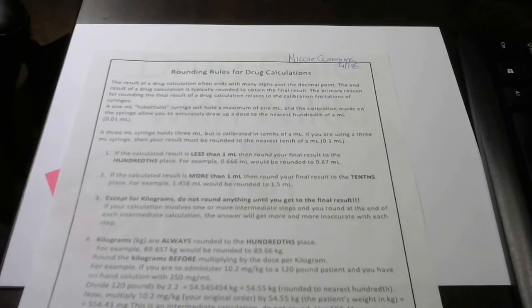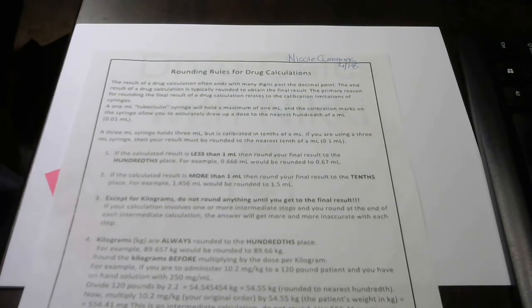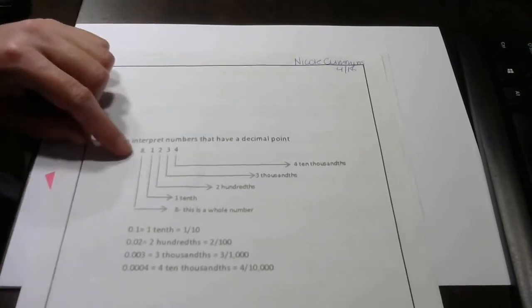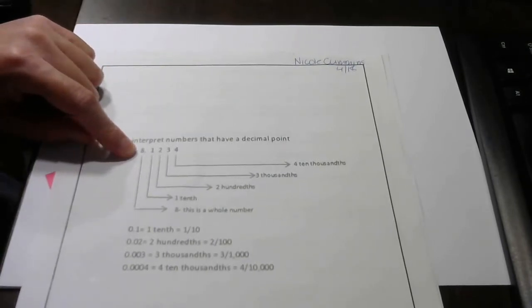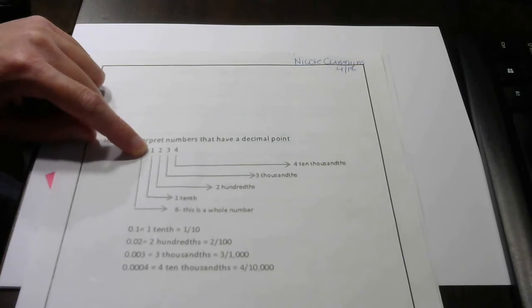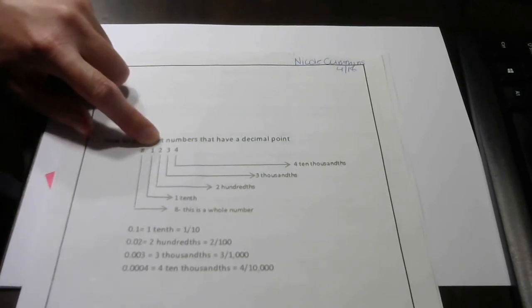If the calculated result is more than one milliliter, then round your final result to the tenths place. So if this number is one milliliter or greater, you're going to round to the tenths place, which is the first number to the right of the decimal.